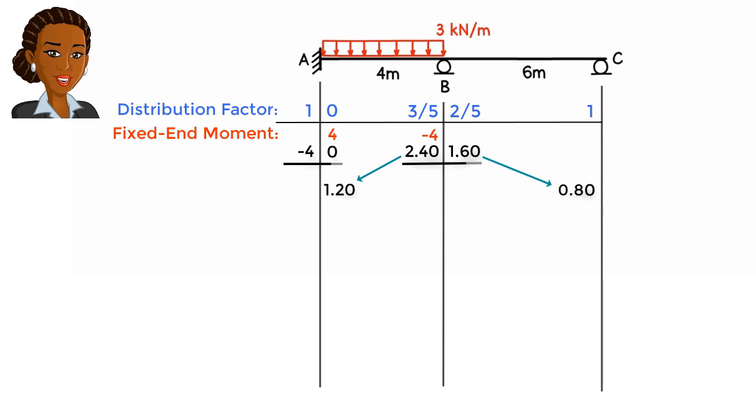But there is no need to carry over half of negative 4 to the other side of our imaginary member since it is not a part of the real structure. Again, we balance joints A and C. Then, we carry over half of the balancing moment at C to the other side of member BC.